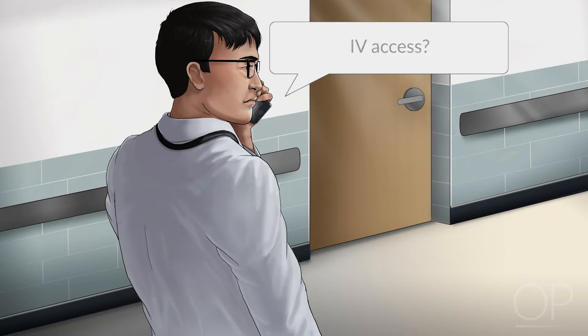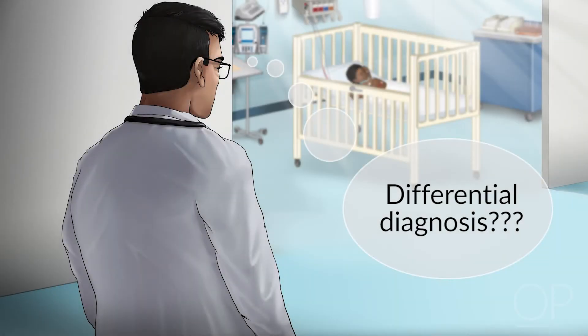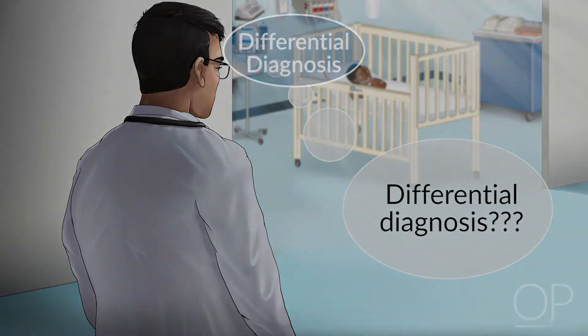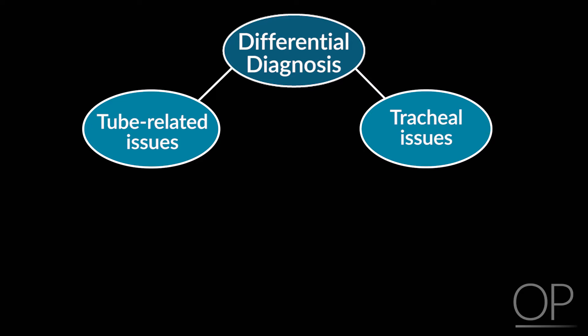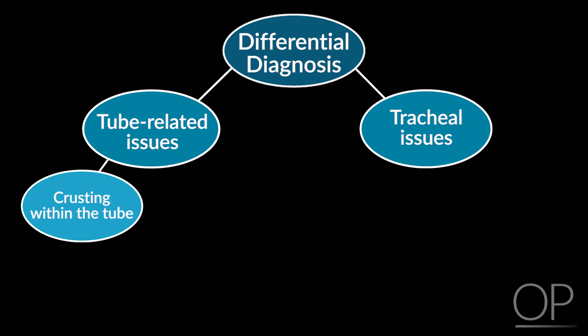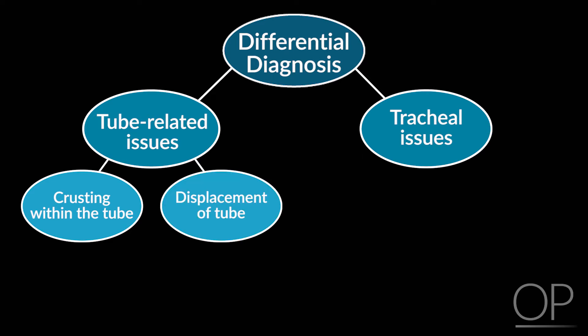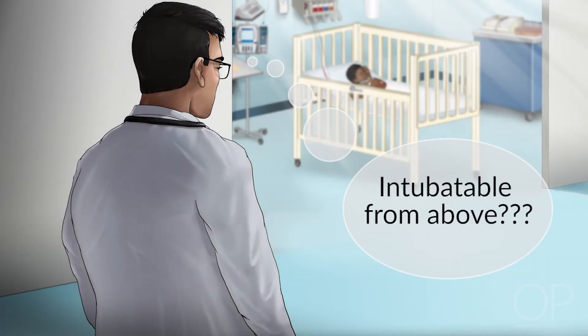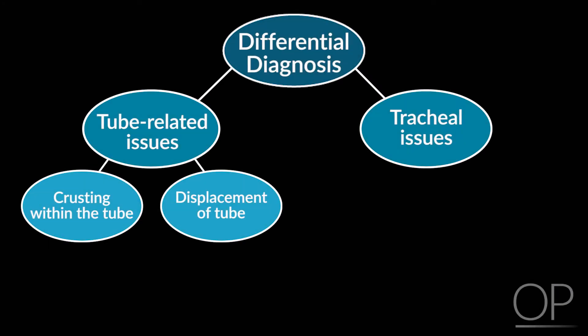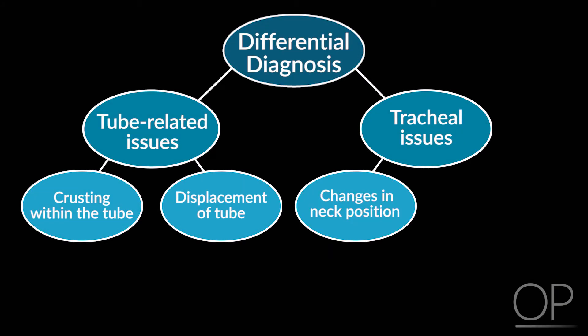You should ask if the patient has IV access and if there is appropriate oxygen delivery set up in the room. As you're heading over to evaluate the patient, consider the following differential. Is this a problem with the tracheostomy tube itself, or is this a problem with the trachea? Tube-related issues may include crusting within the tube from dried blood or mucus, or displacement of the tracheostomy tube from the trachea. And always ask yourself, why does this patient have a tracheostomy, and are they intubatable from above?